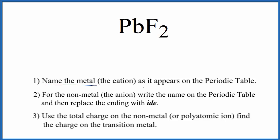First, we write the name of the metal as it appears on the periodic table. Pb is lead. Next, we write the name for the non-metal as it appears on the periodic table. That's F, which is fluorine. Then we cross out the I-N-E and change it to I-D-E.